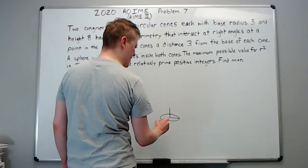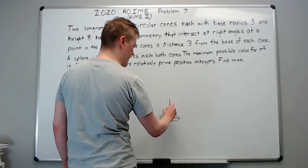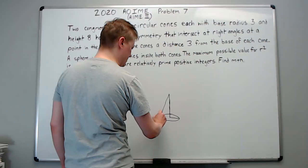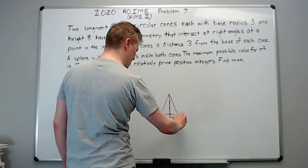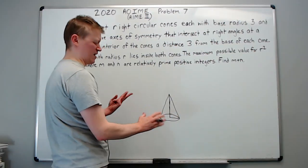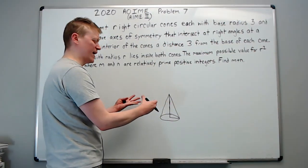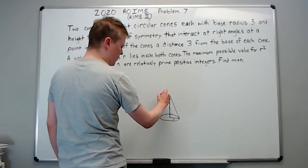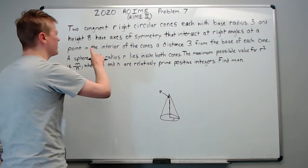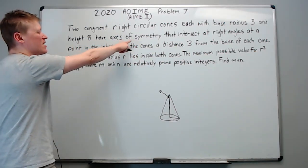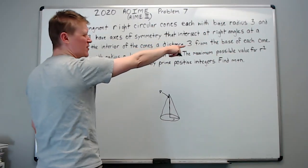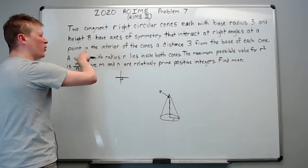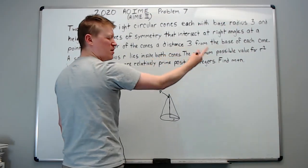And if that's 3, then if I come up, that should be about 3. And let's go another 3, and then 2 more on top of that. So it should look something like this. This is 3, and this is going to be 8 going up. And what do they say about these cones? They intersect — their axes of symmetry intersect each other at a right angle, so perpendicular, like this.